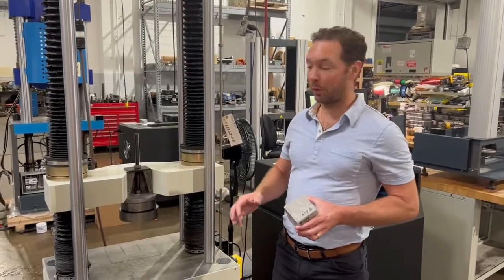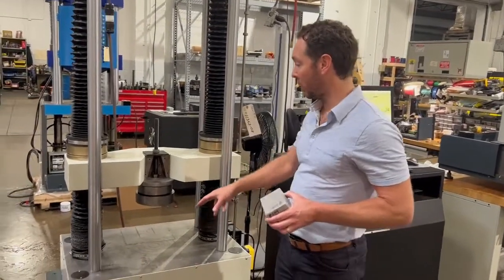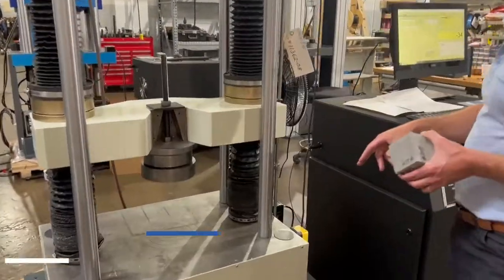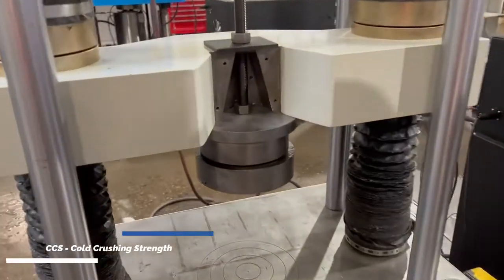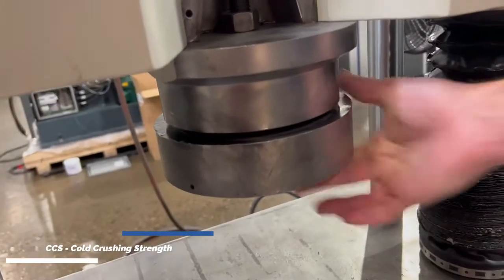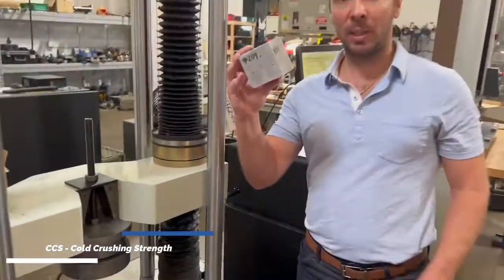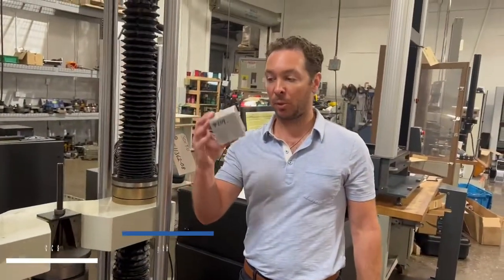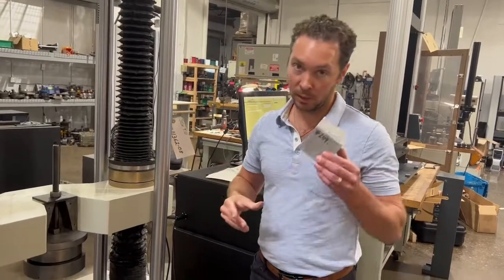We just switched over from our MOR fixture to our CCS cold crushing strength fixture, which is a spherically seated compression fixture. Here's our specimen. It is a 3x3x3 cube and it's ready for testing.